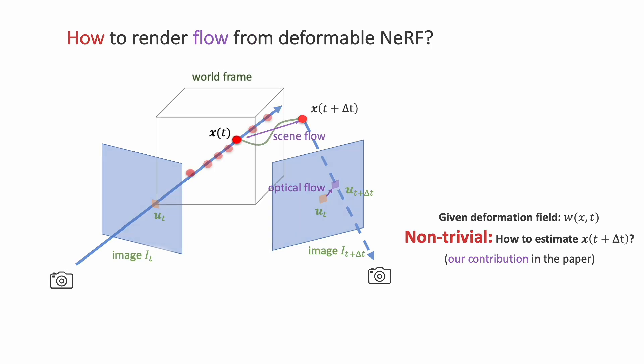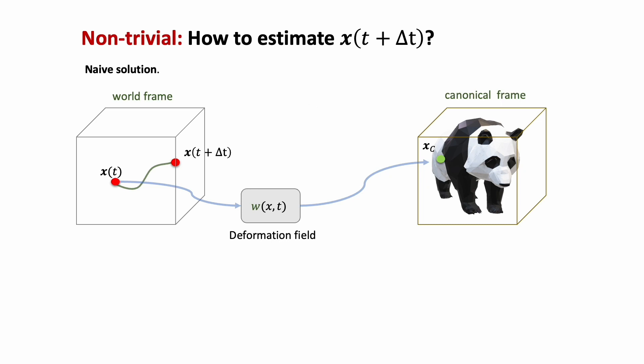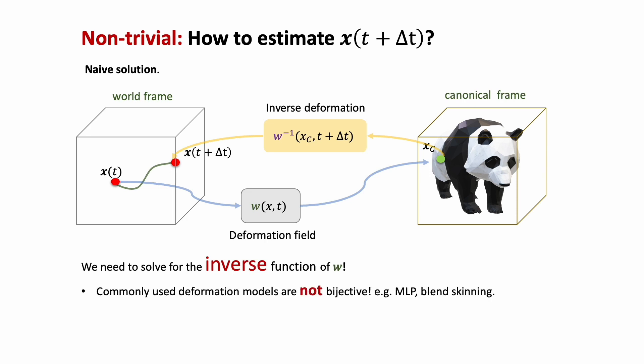A naive solution to estimating the next position would involve finding an inverse function of the deformation field. This would allow us to determine the corresponding point location at any given time, based on its location in the canonical frame. However, finding such an inverse function is challenging, as most commonly used deformation representations are not bijective and therefore not invertible.